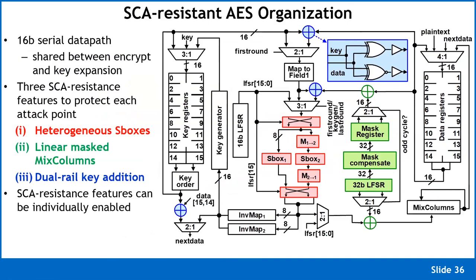To counter this, you must break the correlation between switching activity and the key. This can be done either by making the current trace completely flat regardless of the key — zero correlation — or by burying the signal-to-noise ratio so far below the noise floor that an impractical number of traces would be required. The technique I focus on is the heterogeneous S-box.